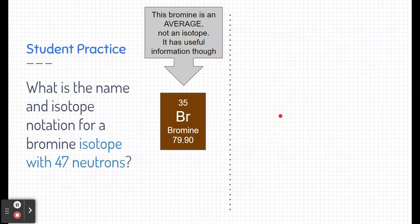Did you figure out the answer? Let's see if I can help you here. So, talking about this bromine on the periodic table, we're going to need some information. But one piece of information we don't need is the mass. This is an average mass.